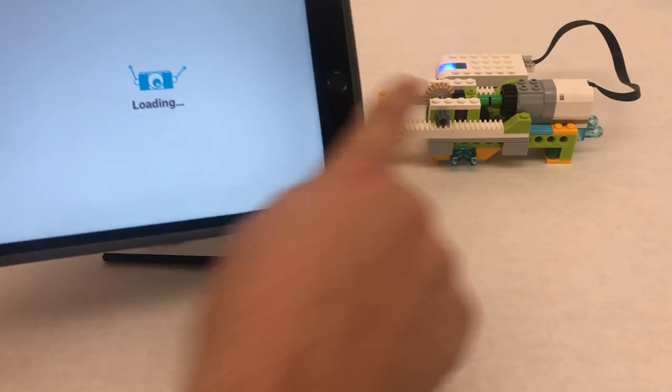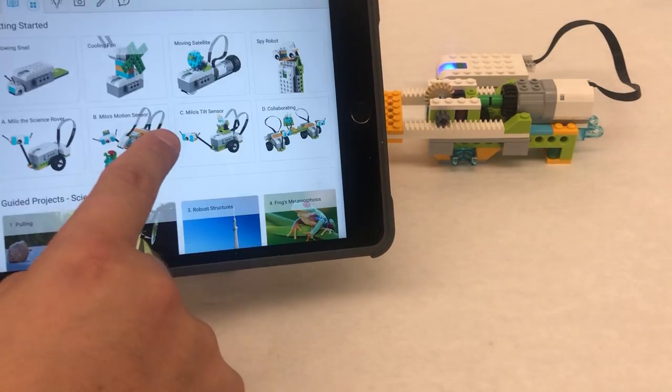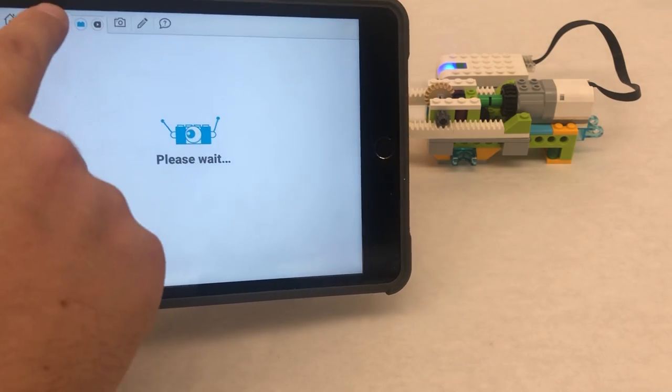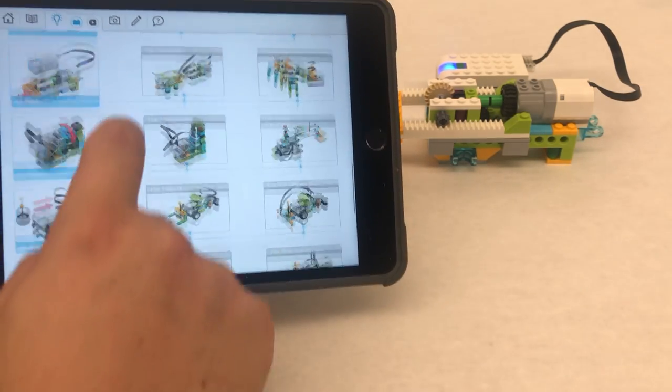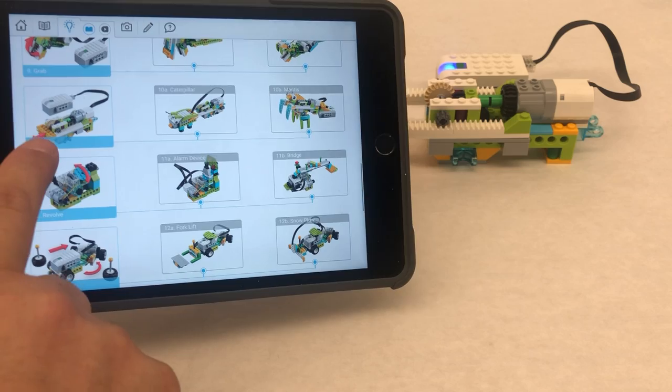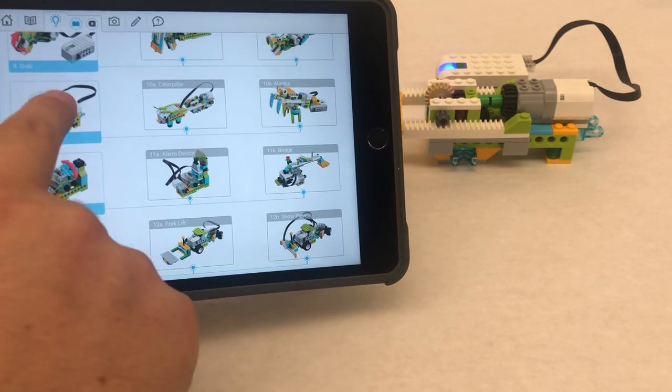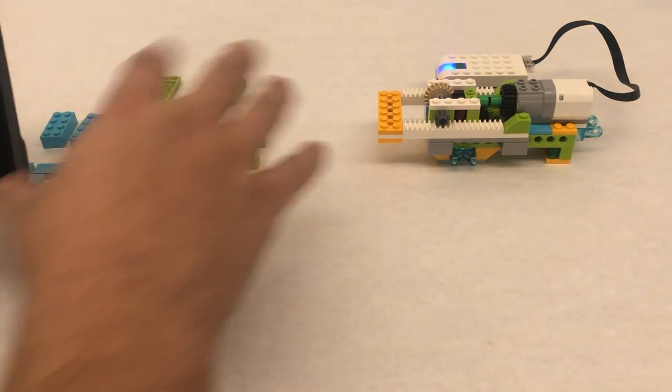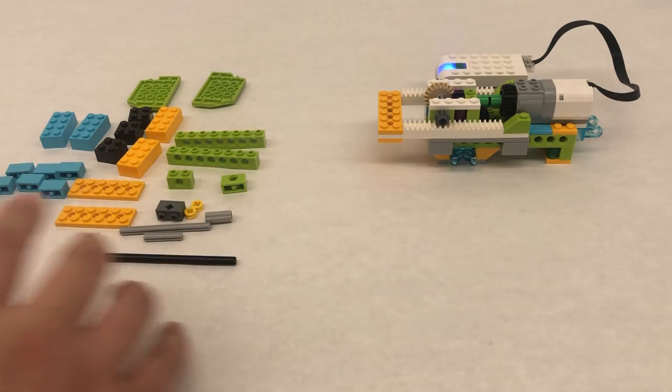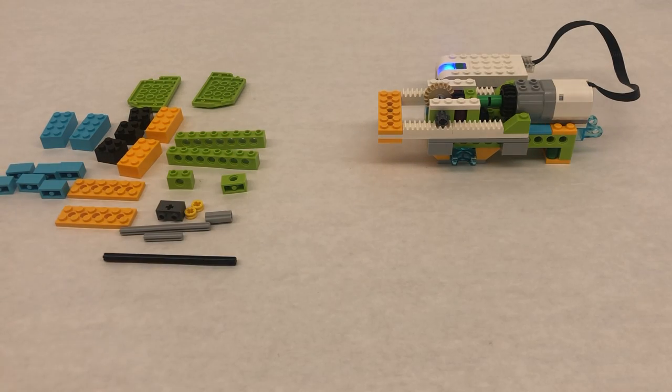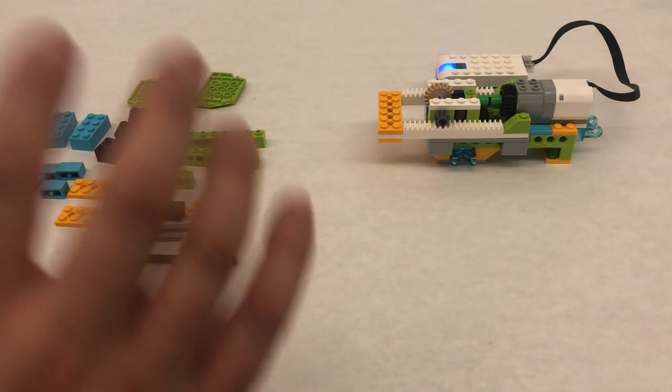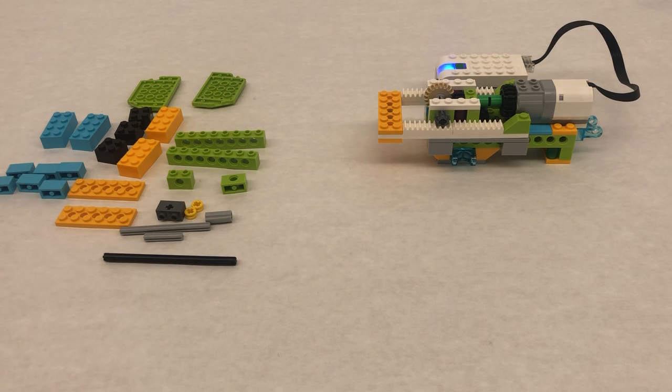So to get the push robot we just went into classroom projects ideas and scrolled down to number 10 which is where you find the push. We just followed the building instructions for this. This next build does not have any building instructions because this is an original that I just came up with, so you can follow this tutorial to build it and then I'll show you the programming behind it.